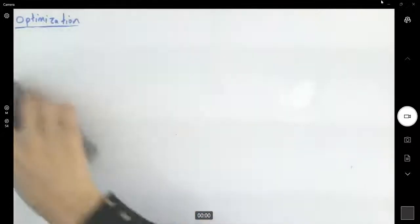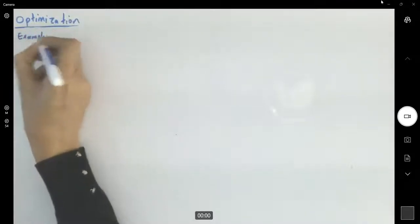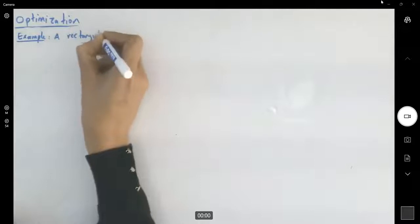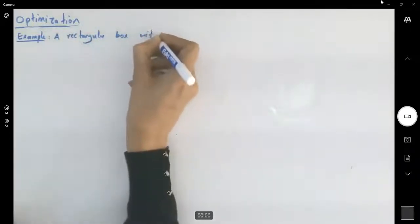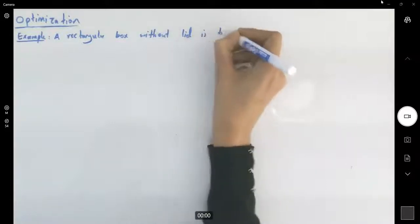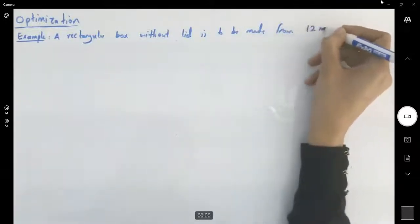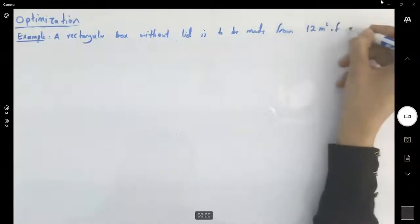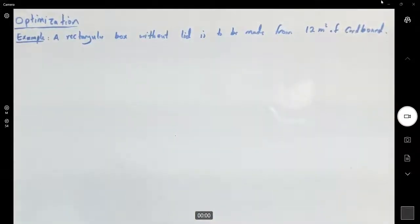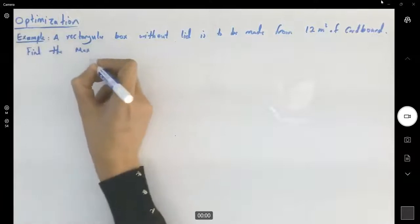I'm going to write down the steps in applying Lagrange multipliers. In this example, we have the following scenario: a rectangular box without a lid is to be made from 12 square meters of cardboard. Find the maximum volume of such a box.